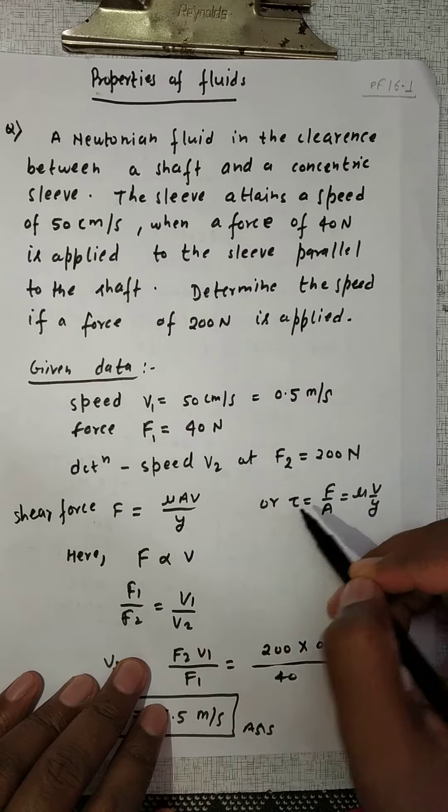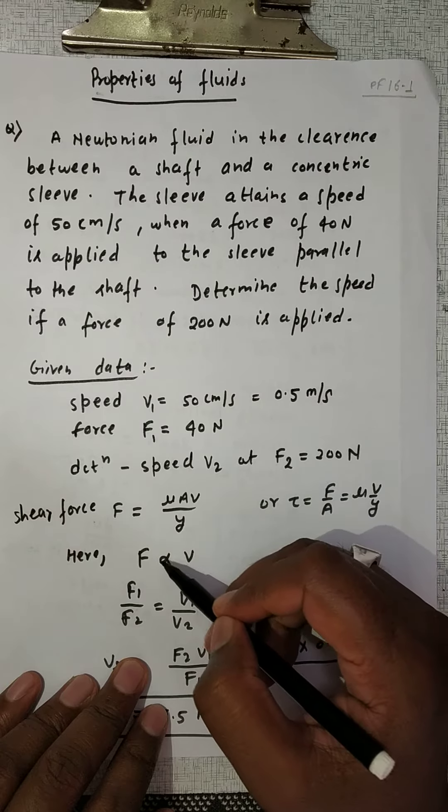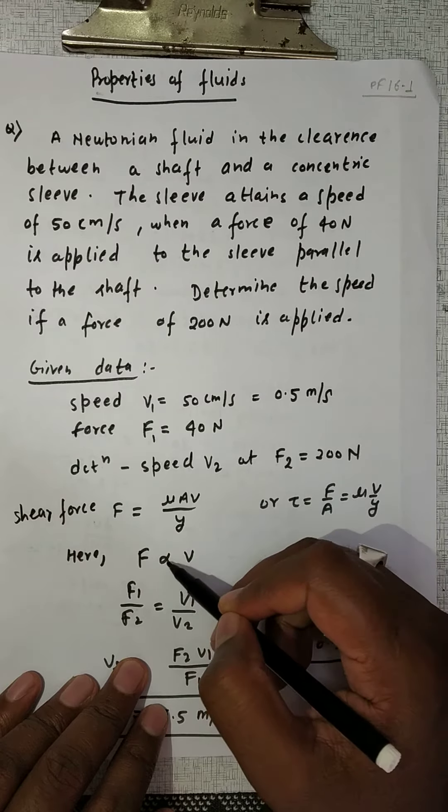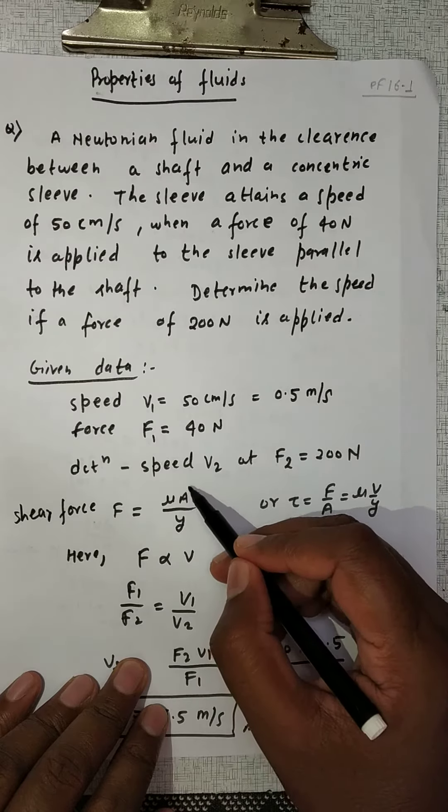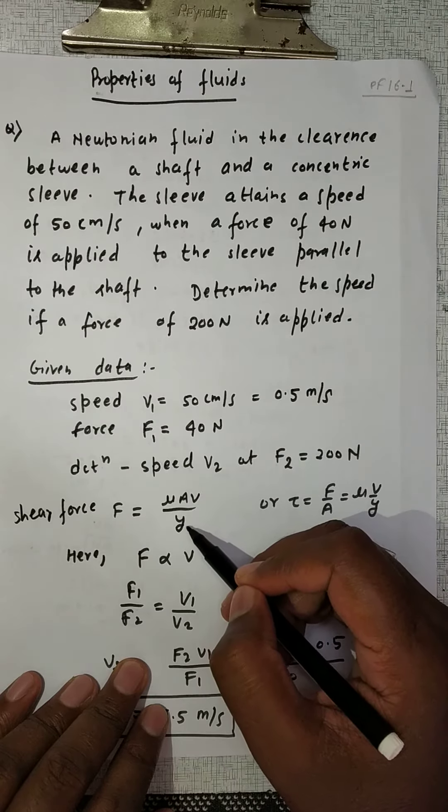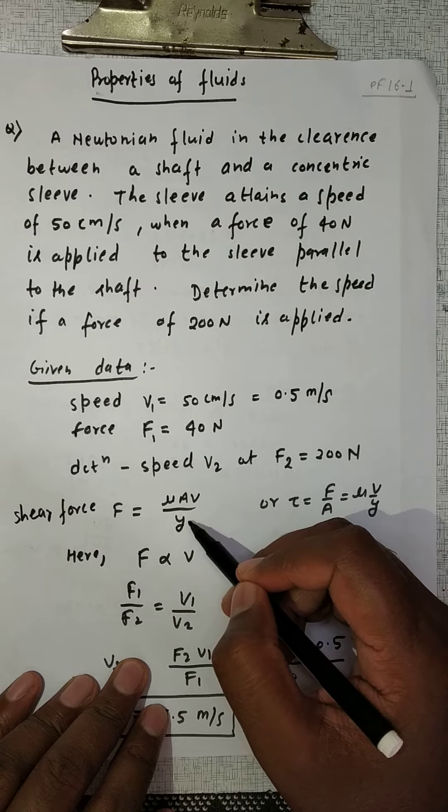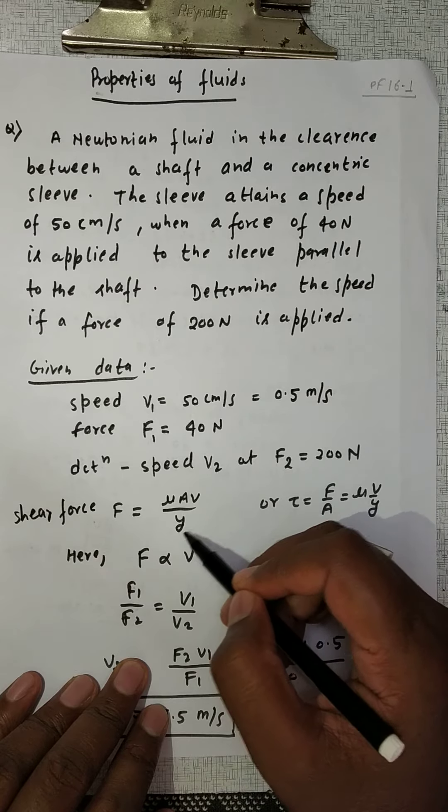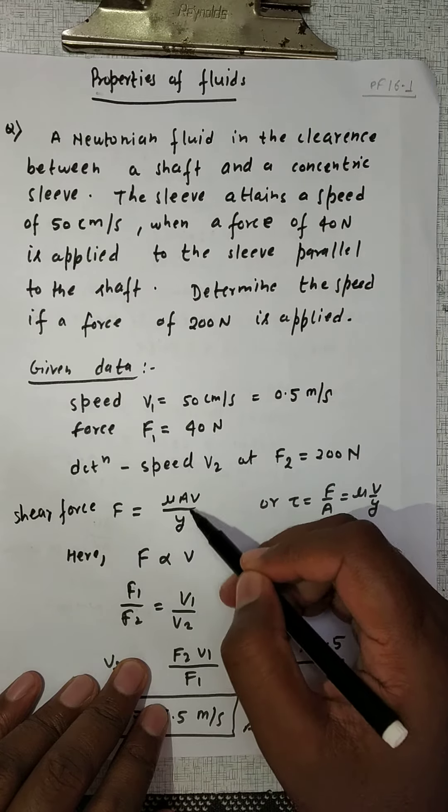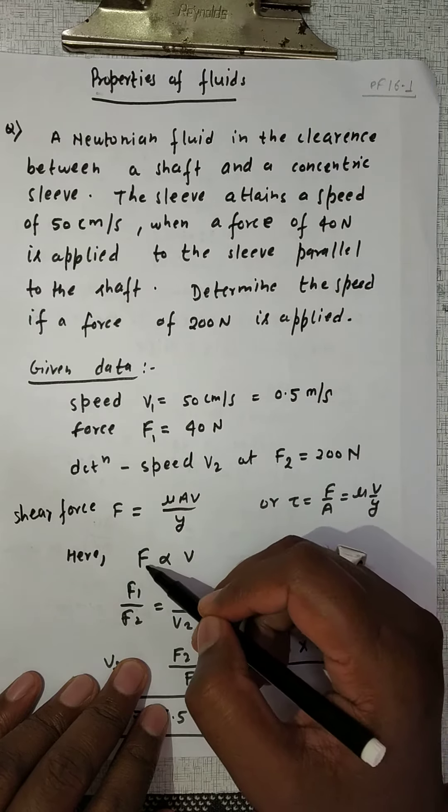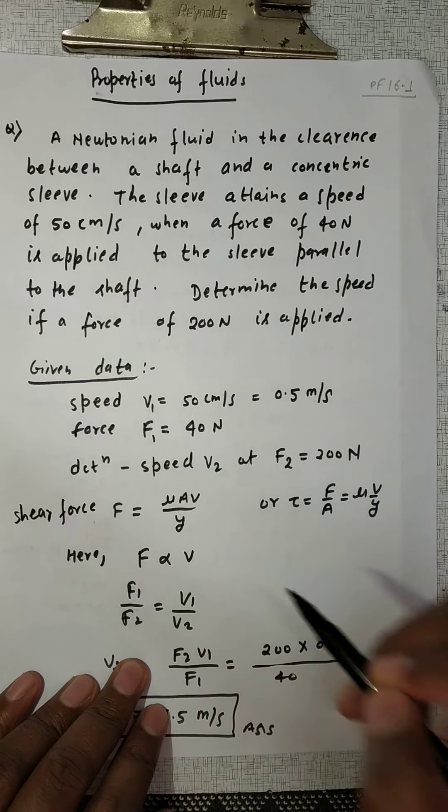So from here, this force is directly proportional to V. If μ is constant, area is constant, and the distance between two plates, this thickness clearance is constant, then all these terms will be constant. So the shear force is directly proportional to velocity.